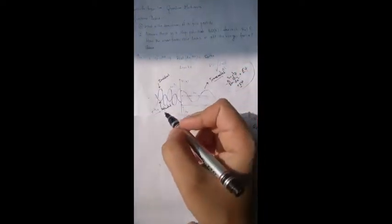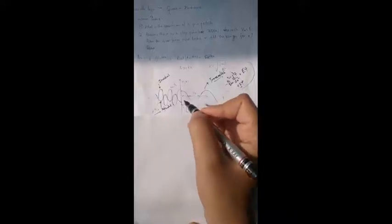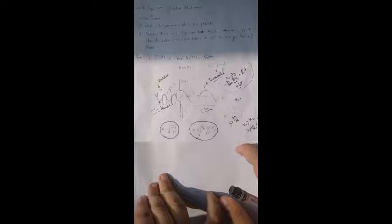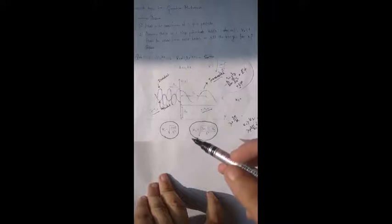And by solving them, we will get two solutions. For the left-hand side we will get e to the power iK1x and for the right-hand side we will get e to the power iK2x. Now, we know that K1 will be root over 2ME by h-bar squared and K2 will be root over 2M(E minus V0) by h-bar squared.